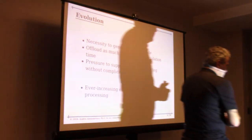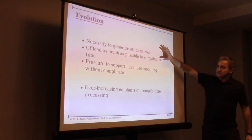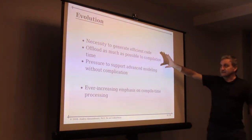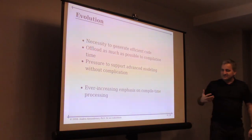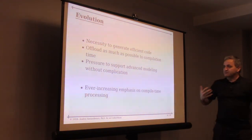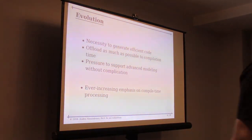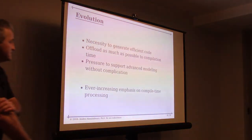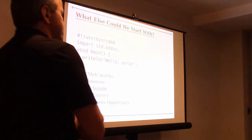What happened after is interesting. There were pressures on the creators and maintainers of the language: generate efficient code, offload as much as possible to compilation time, support advanced modeling without complications. That led to a state of affairs in which the D language had pressure on it to emphasize compile-time processing. There's a research field close to that called partial evaluation, which is sort of a programming languages kind of thing. So we got to a point of looking at defining features amenable to that kind of stuff.